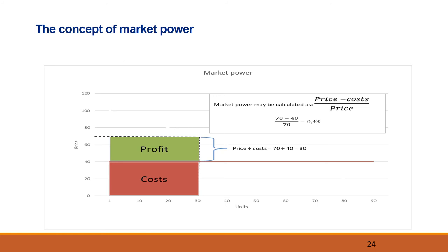If there had been more competition in the market and the demand curve had shifted downwards, then the optimal price for the company would have been lower, and the calculated market power would have been lower. This way of calculating market power is also known as the Lerner Index.